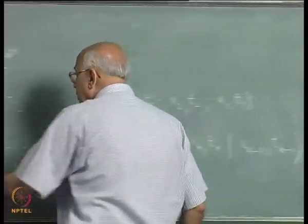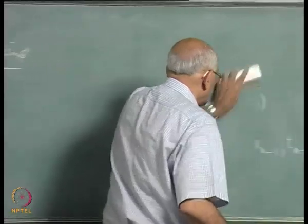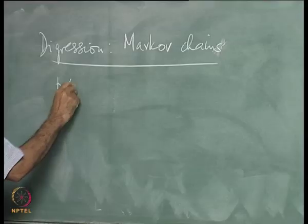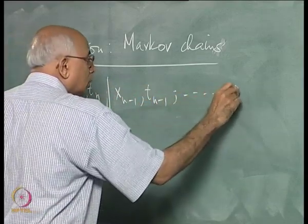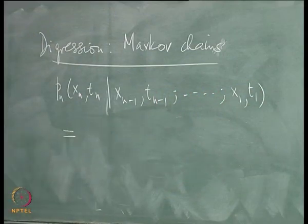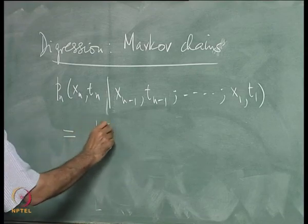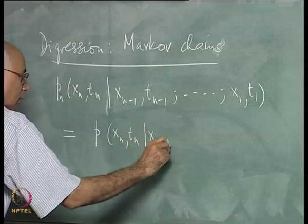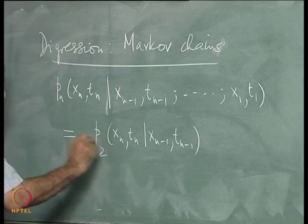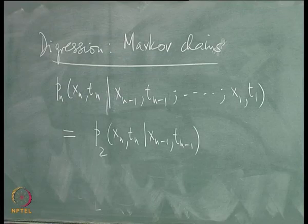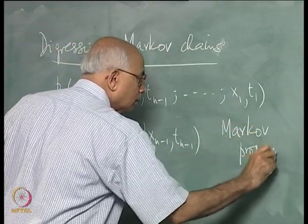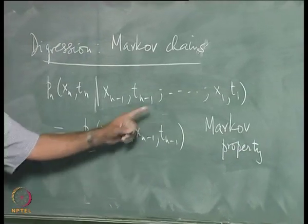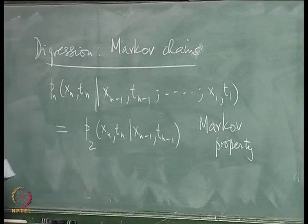For a Markov process the full conditional probability simplifies: P_n(x_n, T_n | x_{n-1}, T_{n-1}; ...; x_1, T_1) = P_2(x_n, T_n; x_{n-1}, T_{n-1}), depending only on two time arguments. This is the Markov property. It is called first-order Markov; if it depended on the preceding two steps it would be second-order, and so on.